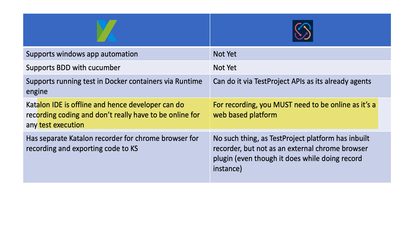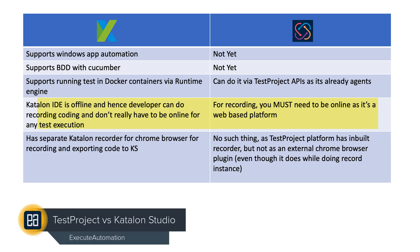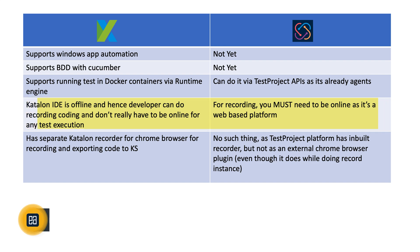Katalon Studio has its own IDE built using the Eclipse framework, which is great because the IDE is updated with each version making it more intelligent. It is offline, so developers can do recording and coding without needing to be online. Whereas for Test Project, you must be online for recording since it is a web-based application. For modifying or editing the test you don't have to be online — you can do it on your local machine and, once online, upload that code to the Test Project platform.